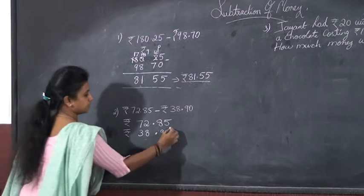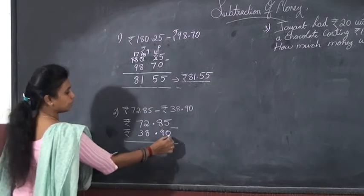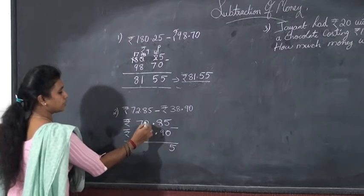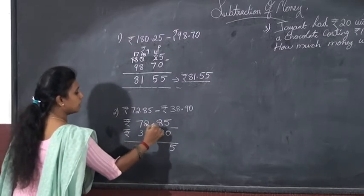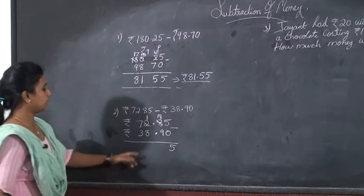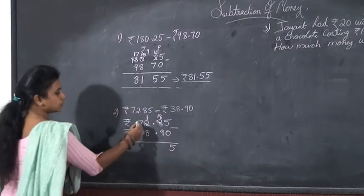Clear? Then minus 5 minus 0 it is 5. Here you cannot subtract 9 from 8 so take borrowing, give 1 to this number, it becomes 18 and remains 1. Again 8 is subtracting, so take, give 1 to this number and it remains 6.